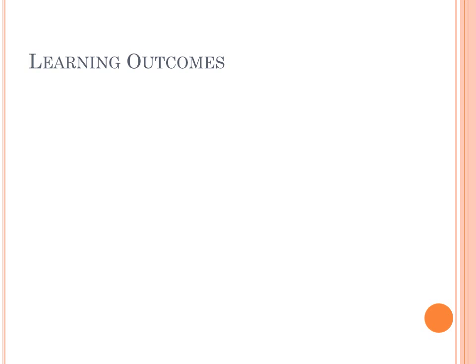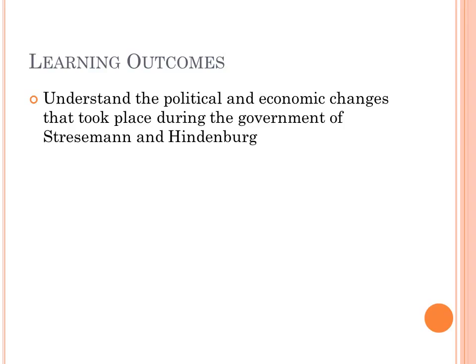So our learning outcomes: at the end of this we'll be comparing and contrasting what we've learned from the beginning, to see what the real changes were — the political and economic changes that happened at this time — and then looking at how effective the policies that were implemented were in creating a robust state. Spoiler alert: maybe not very, since the state didn't last so long.